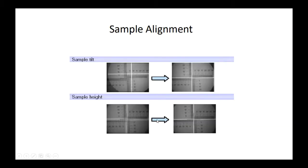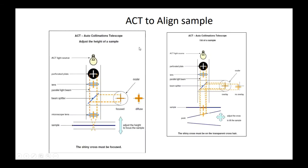After placing the sample, we must align the sample tilt and height. If the sample tilt and height are properly adjusted, then through the eyepiece we can see the correct image. The auto-collimation telescope is used to align the sample. When the height is correct, we get a focused beam, and when the tilt is properly adjusted, the crosshair and the light must overlap each other.